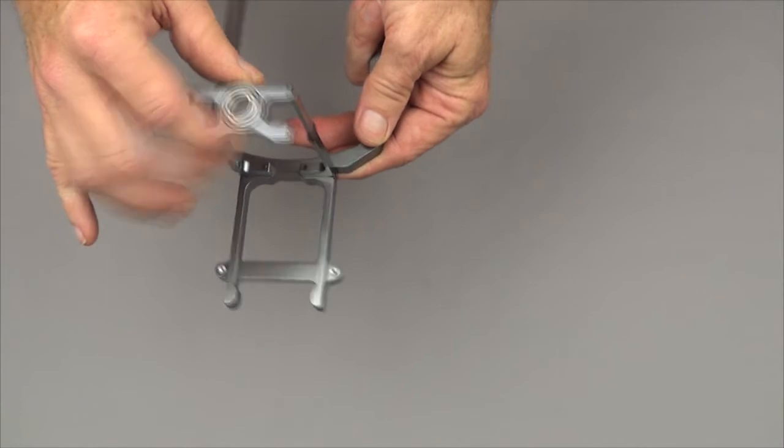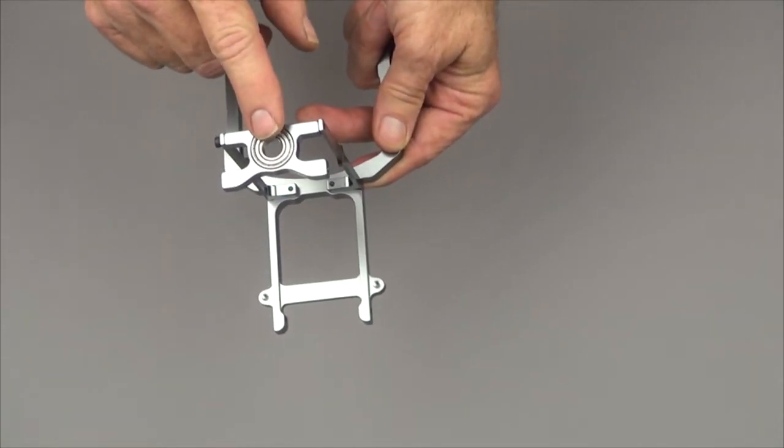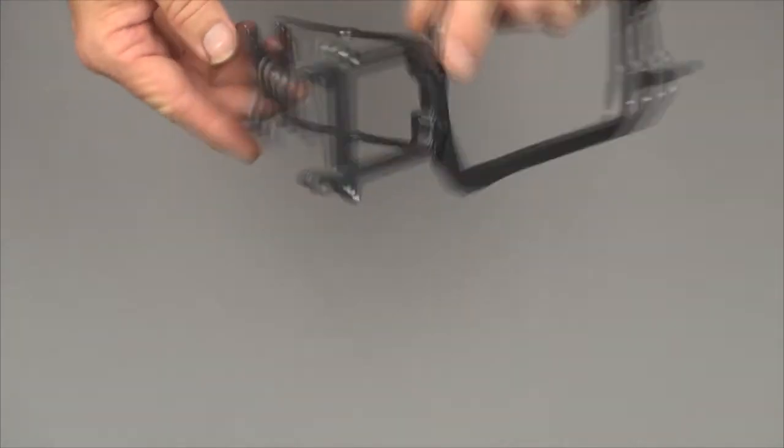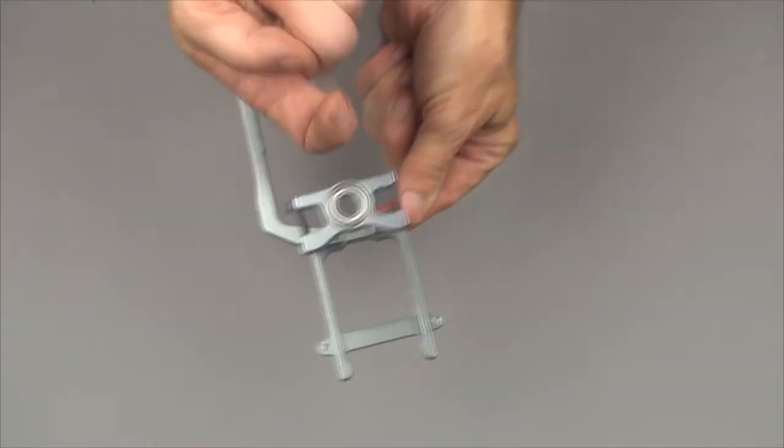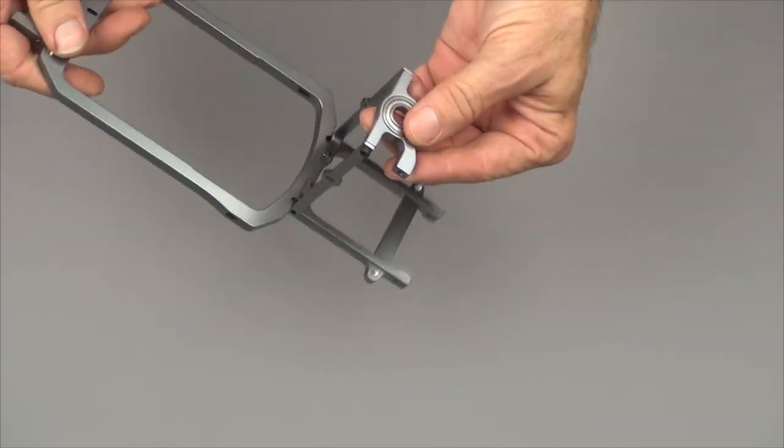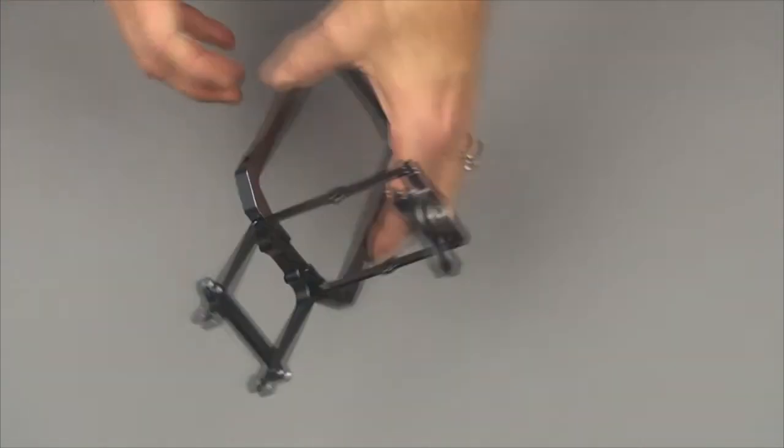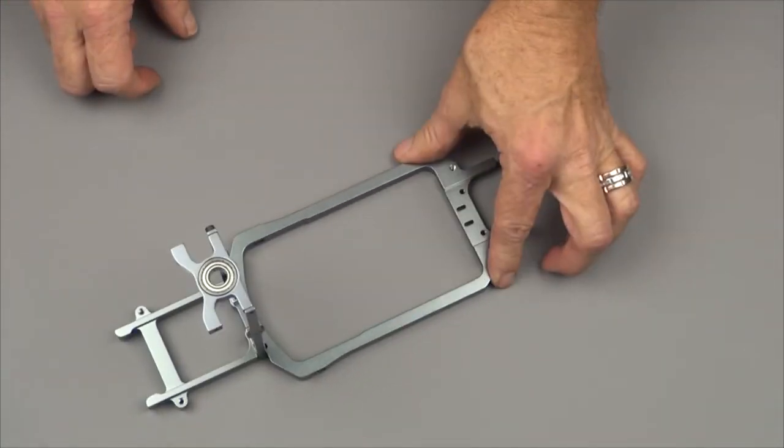The bearing block is going to go between these at the top. The bearing opening faces up so that if the bearing were going to fall out, it would come out this way. Now, I've put a bolt in here to hold this just to show you where it goes. This bolt doesn't go in at this point. It's going to go in in a couple of steps, but I wanted to show you how this fits together.